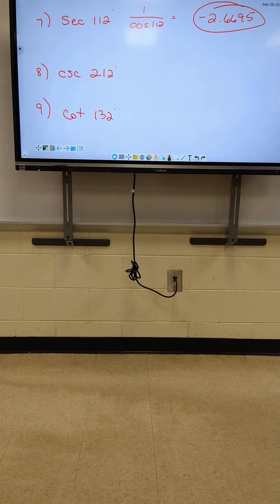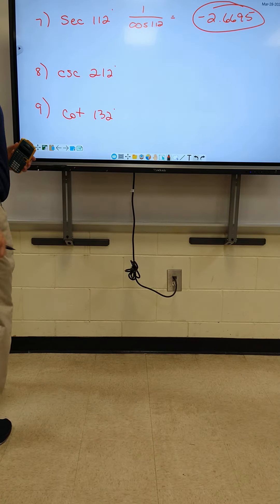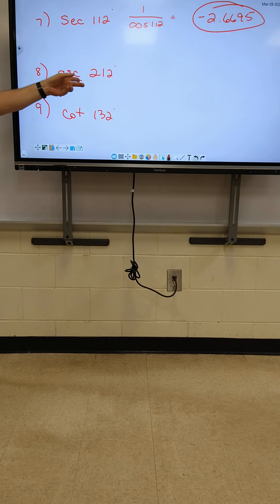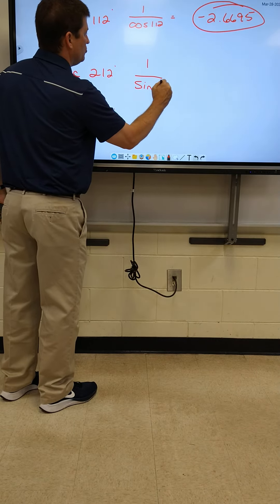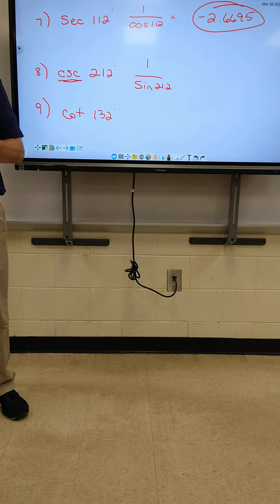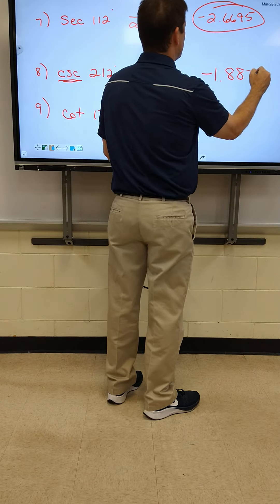Check that and make sure that's what everybody gets. We don't have a button for cosecant either, so what are we going to do? We're going to use the opposite, which is sine. You've got to do it this way: 1 over sine of 212. The 1 has to be on top all by itself, and sine of 212 has to be on the bottom. I got negative 1.8871.